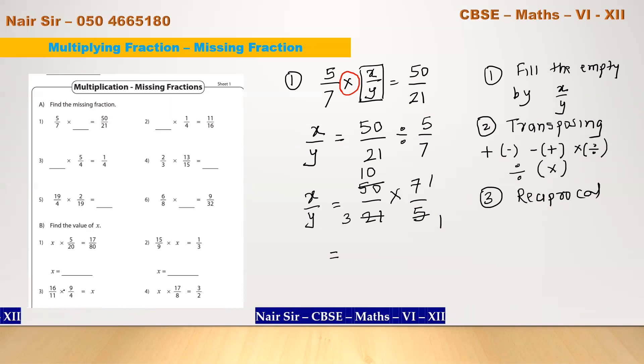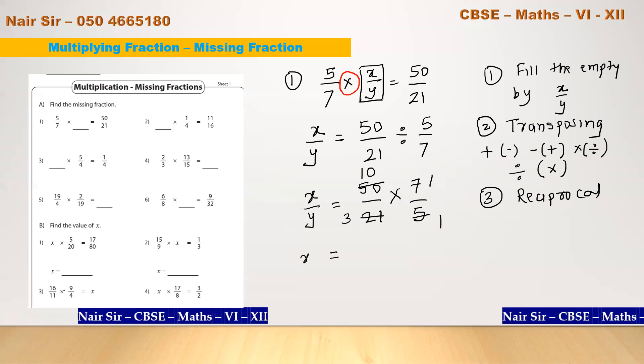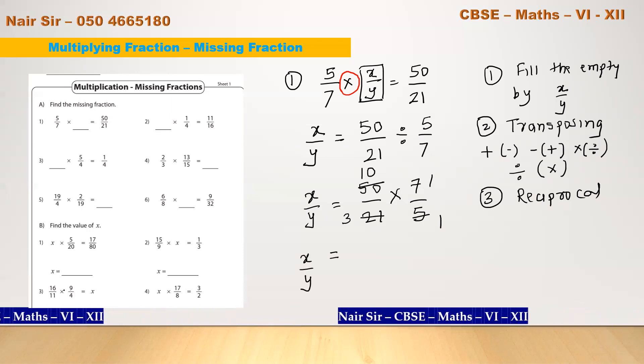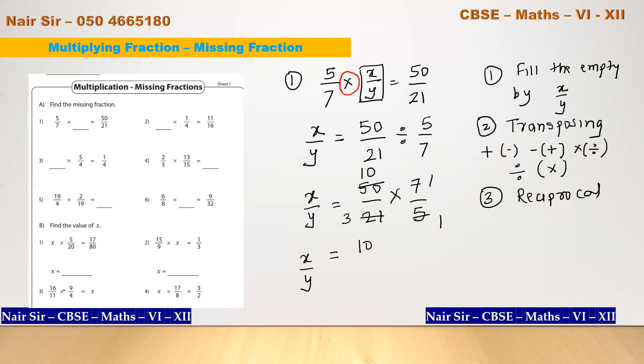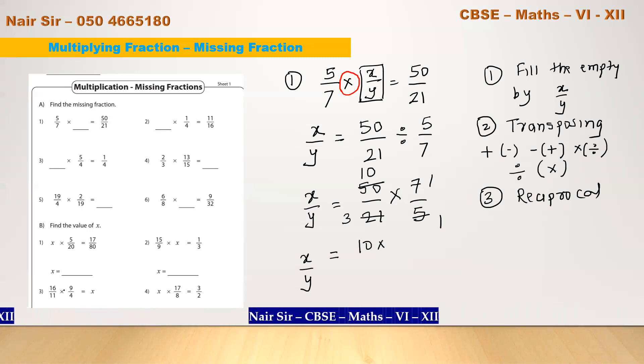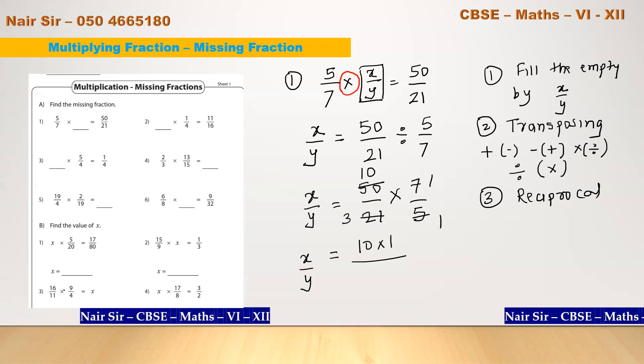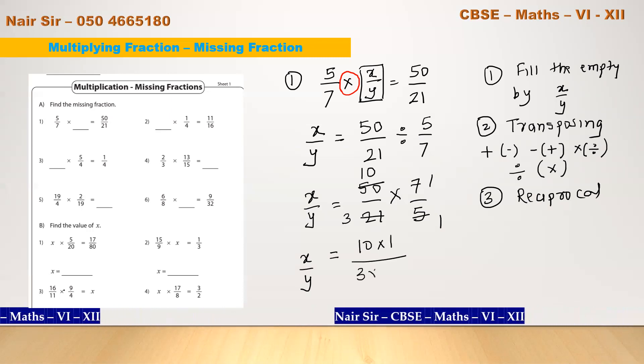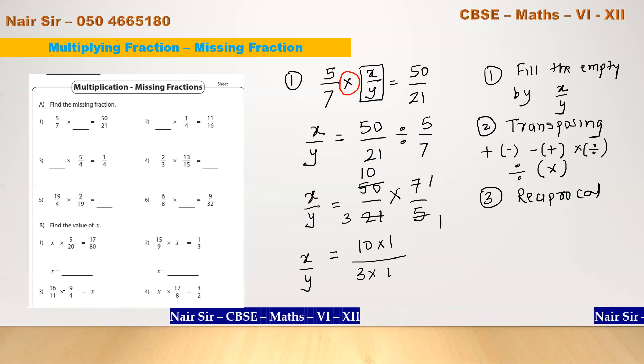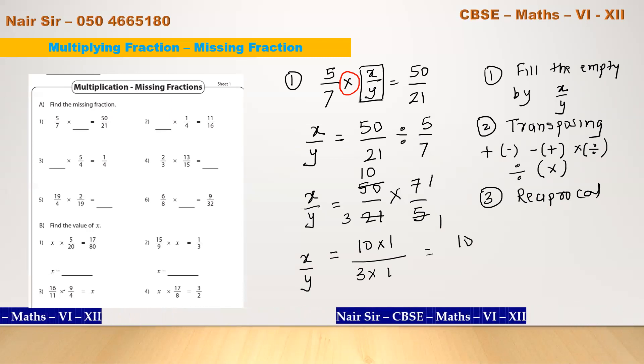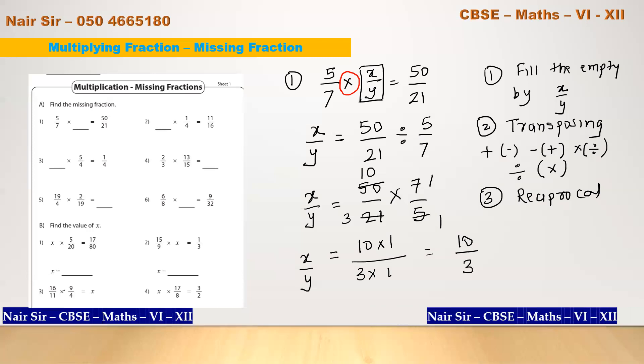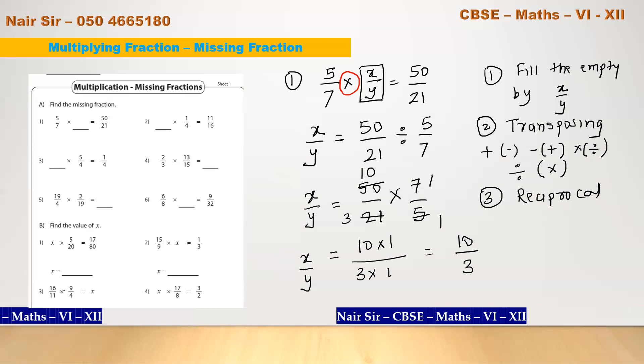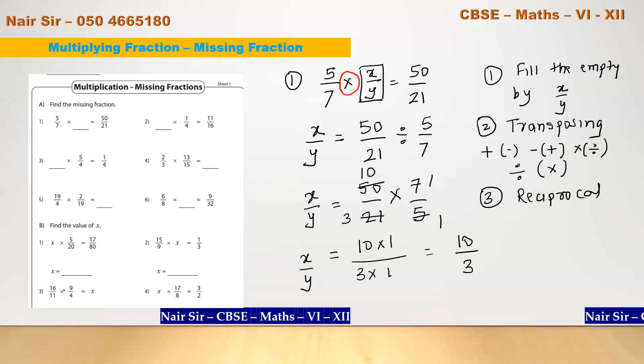Now what is left? Write this: x upon y is equal to... instead of fifty there is ten, I'm going to write ten. Instead of seven it is one, and instead of twenty-one it is three, and instead of five it is one. So what do I get? Ten ones are ten. Ten upon three.